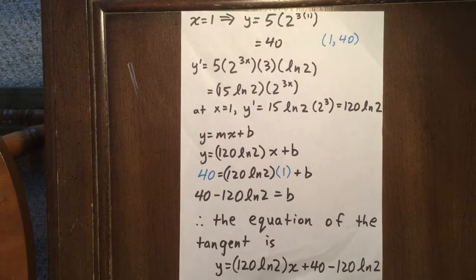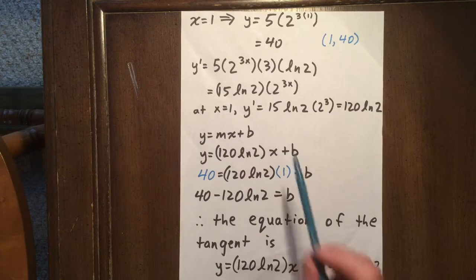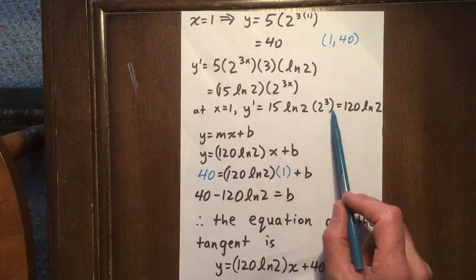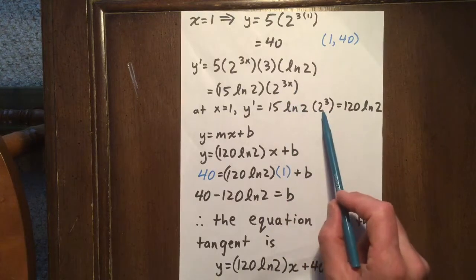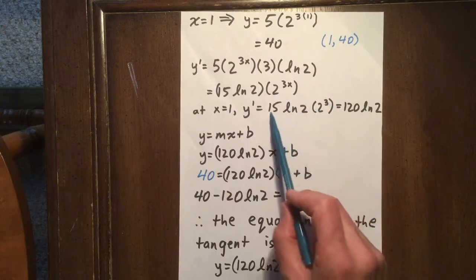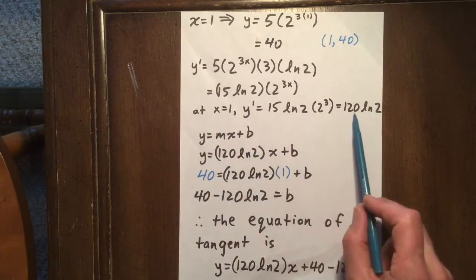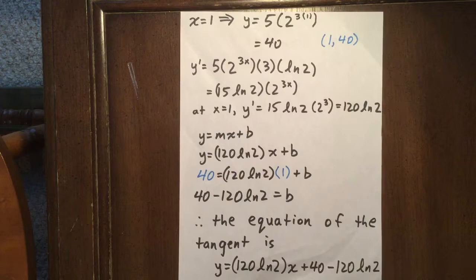At x equals 1, we should determine what the slope would be. The slope will be 15 times ln 2 times 2 to the 3, which is 8. 2 to the 3 is 8, times 15 is 120. So when x equals 1, the slope is 120 ln 2.